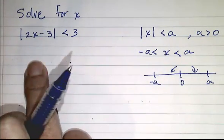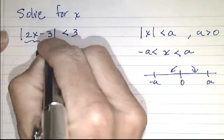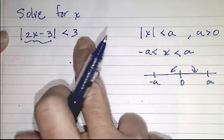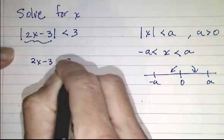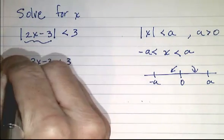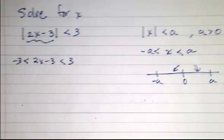So that's what we're doing over here. In this case, this right here is like my x over here, and the 3 is like my a. So everything inside is less than 3 and bigger than negative 3. Those things are happening simultaneously.